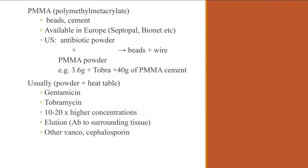Dead space is like a hole in a bone after infected tissue is cleaned out. To deal with it: beads fill the space and deliver antibiotics locally, while flaps bring blood supply. The beads must eventually be taken out and replaced with a bone graft. You cannot put a bone graft in the middle of an active infection — the infection must be cleared first. When the orthopedic surgeon removes the beads, they culture the tissue; if negative, they proceed with bone grafting; if positive, beads go back in and IV antibiotics continue.